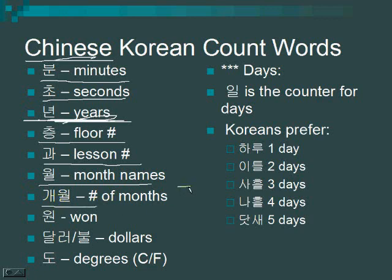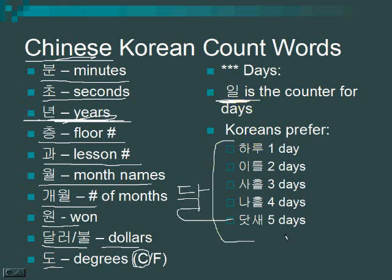개월 counts number of months and has the same meaning as 달, but 달 only takes native numbers. 원 is Korean currency. 달러 or 불 both mean dollars. 도 means degrees — Koreans use Celsius only. 일 is the counter for days with Chinese numbers, but Koreans 99% of the time prefer: 하루 for one day, 이틀 for two days, 사흘 for three days, 나흘 for four days, and 닷새 for five days.